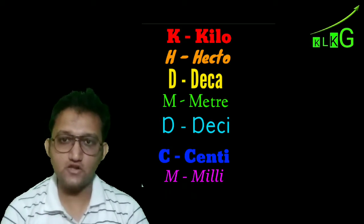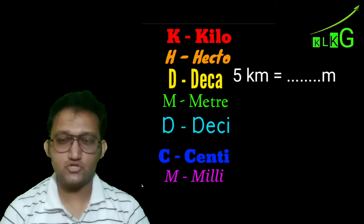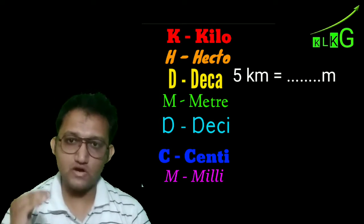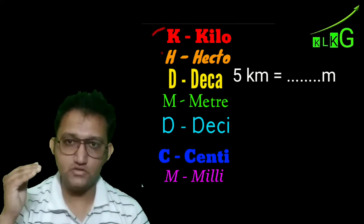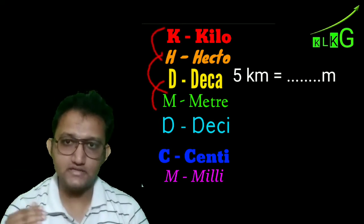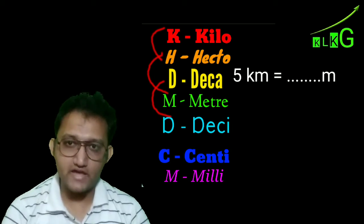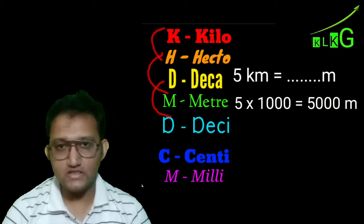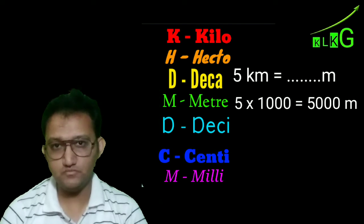For example, if somebody asks you to convert 5 kilometers into meters: how many steps do you come down? One, two, and three. So 5 multiplied by 1000 equals 5000 meters.